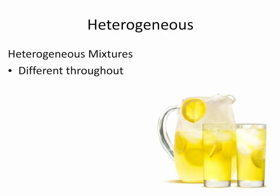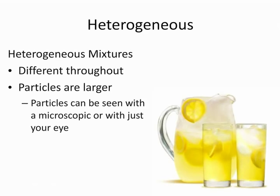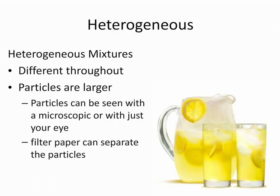Heterogeneous mixtures are the opposite — their composition varies throughout. Some of the particles are larger and can be seen. You may or may not need a microscope to see them, but the particles can be seen. Filter paper can trap the larger particles in a heterogeneous mixture, letting the smaller particles pass through. Filter paper can be used to separate the particles of some heterogeneous mixtures.